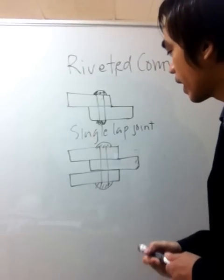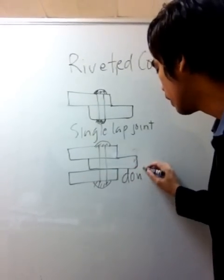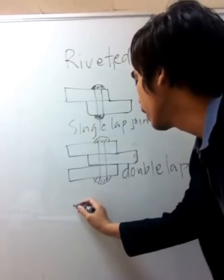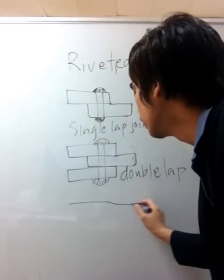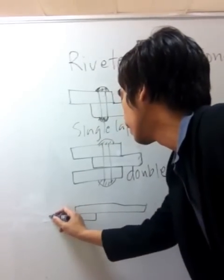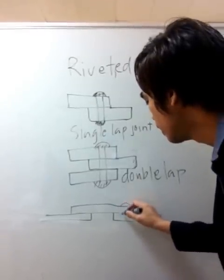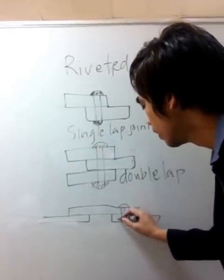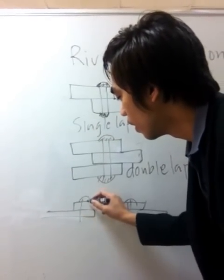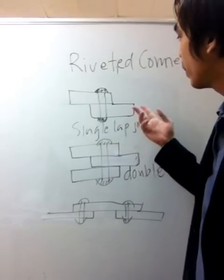The last common type of riveted connection is the butt joint, in which three materials are being connected. We have one material here and then another plate here, and then these are connected. So these are the three most common types of riveted connections.